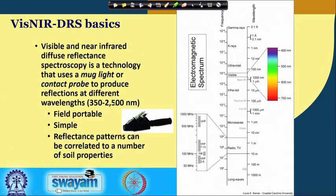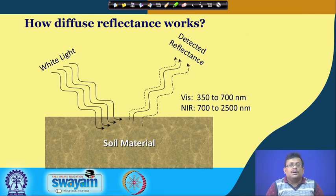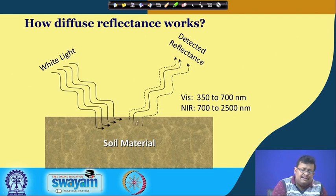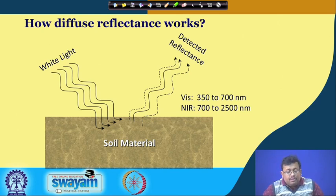It is called visible to near-infrared diffuse reflectance spectroscopy because it measures reflections from 350 to 2500 nanometers, which roughly covers the visible and near-infrared range. When white light hits soil material, which has a rough surface, some amount is reflected and this reflected radiation is detected by the detector in the VisNIR DRS from 350 to 2500 nanometers.